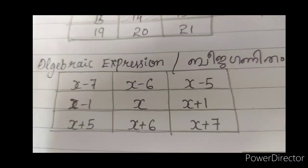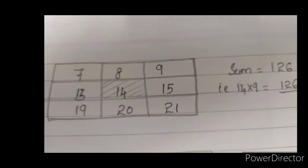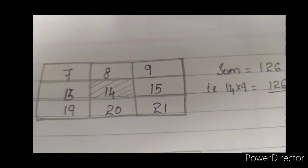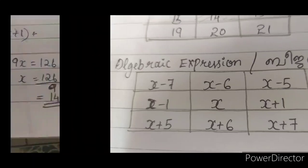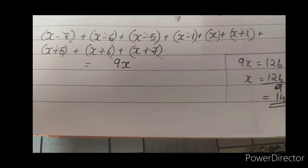We will add this. How did we do this? 7 plus 8 plus 9 plus 13 plus 14 plus 15. We will add all these using algebraic equations. Let x be the center number, and the 9 numbers in the 3×3 box are expressed as: x minus 7, x minus 6, x minus 5...